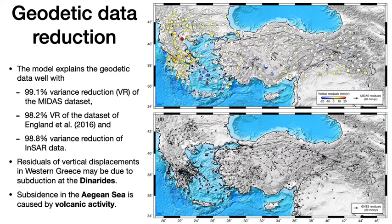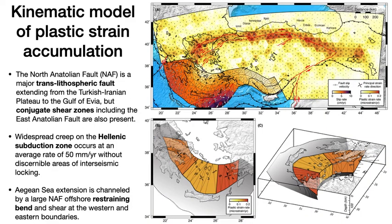The model explains the geodetic data very well, providing a variance reduction of the MIDAS data above 99%, above 88% for the combination of Nocquet and England, and even above 98% for the InSAR velocity field. The inversion reveals the pattern of slip on the megathrust and plastic strain accumulation in the ductile substrate. The key result is that a major shear zone extends from northern Iran to the Gulf of Evia in Greece, representing a transcontinental trans-lithospheric shear zone.